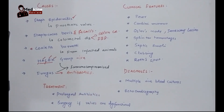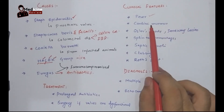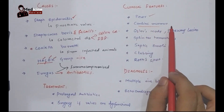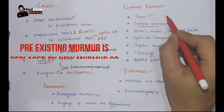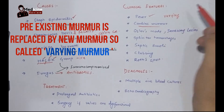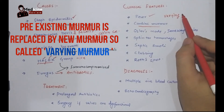Regarding clinical features: since this is an infection, there will be fever. There is also a cardiac murmur caused by turbulent blood flow when blood passes through damaged cardiac valves. This murmur is called a 'changing murmur' or 'varying murmur' because it changes as the heart suffers infective endocarditis.